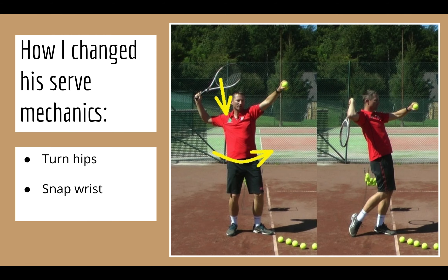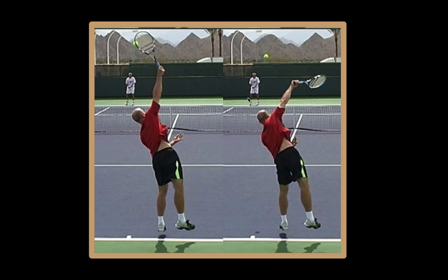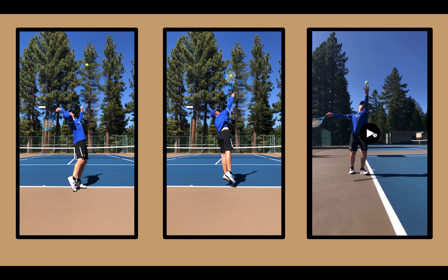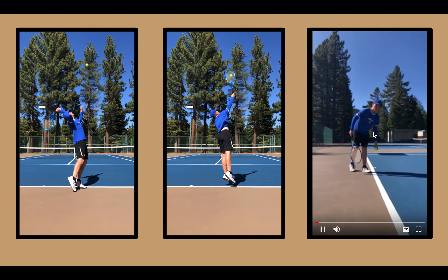Given the information from the perfect serve, I noticed that turning Travis's hips will generate more power from the trunk, and getting him to snap his wrist at the end of his serve will improve aim, therefore making the serve more powerful and consistent. Notice in this video how Travis's hips barely rotate and there is basically no wrist snap.